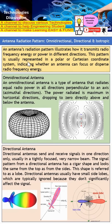This pattern is usually represented in a polar or Cartesian coordinate system. It indicates whether an antenna can focus energy — which is the directional case — or disperse the RF energy, which is the omnidirectional case.